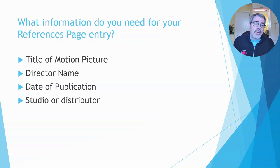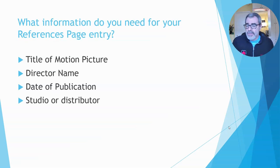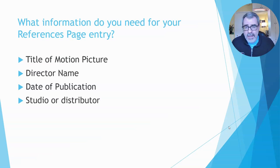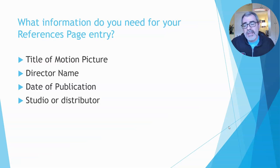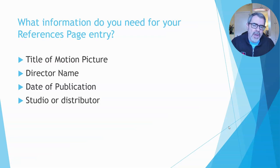Before you do any of that, you need to gather information. These are the four things that you need: the title of the film — it can also be a documentary — the director's name, when the film was published (specifically the year), and the studio name or the distributor's name. You may have more than one, but I'll show you what to do with that.